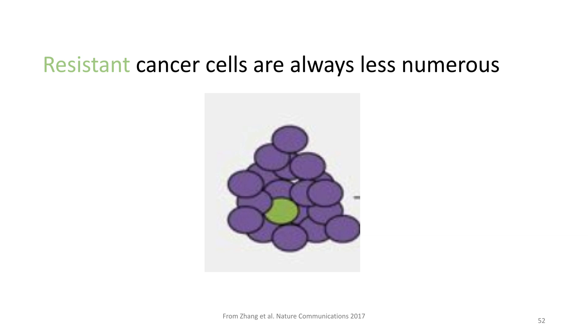Now I'm going to have you help me treat a patient with prostate cancer. This is a prostate cancer tumor. The purple cells are sensitive to treatment. Treatment for prostate cancer involves removing androgen activity from the body, either by removing the androgens or blocking their activity, or both. That's called androgen deprivation therapy, or ADT. So we're going to do this with this patient.